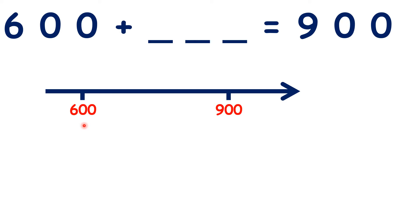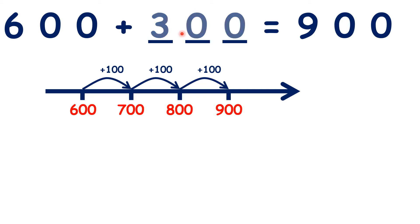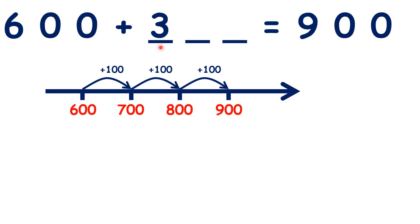We could count on a number line: from 600, we count 700, 800, 900. We added 100 three times, so that's 300. But without using a number line, we might still be able to answer this question, because both numbers are multiples of 100. So if we ignore our tens and units, we have 6 plus something is 9. You can easily work out that 6 plus 3 is 9, but we don't want to just write 3, because 600 plus 3 is 603, not 900. So we need to show that this 3 stands for 300 — we need zeros in our tens and units columns.